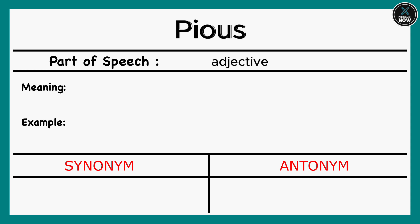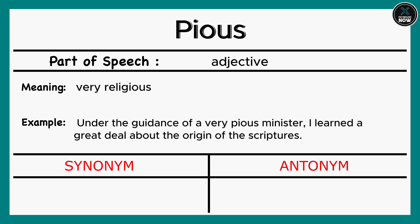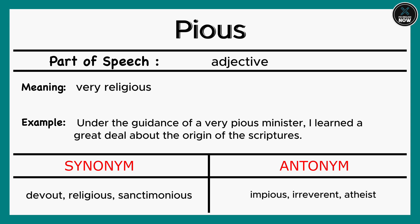Pious: Very religious. Example: Under the guidance of a very pious minister, I learned a great deal about the origin of the scriptures. Synonyms: Devout, Religious, Sanctimonious. Antonyms: Impious, Irreverent, Atheist.